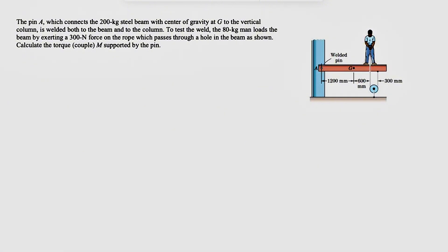And we need to calculate the couple or the torque M supported by the pin. So if you just want to start with the free body diagram of the beam, we have a welded pin at point A, which means we're going to consider AX and AY, and we have a couple M.